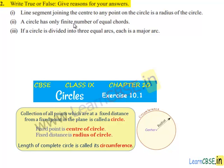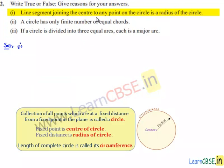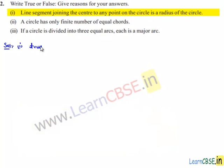Moving on to the second question: write true or false and give reasons for your answers. First bit — a line segment joining the center to any point on the circle is called the radius of the circle. That is true, because all the points of the circle are equidistant from the center, and that equal distance is known as the radius.